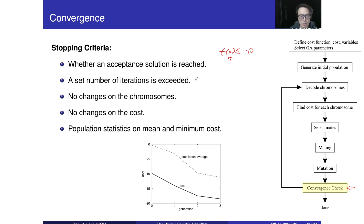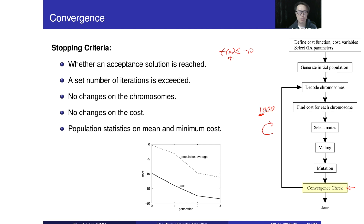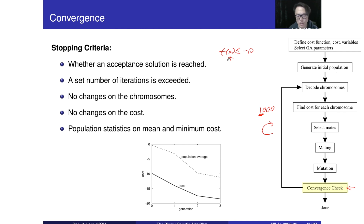Another stopping criterion is that we repeat this process for a set number of iterations — for example, 1,000 times. That means no matter whether we achieve a feasible solution or not, we are going to stop. Of course, if we reach the maximum iteration and the solution is not good enough, we can continue — just use the last solution and put it back into the population as one of the members, and then repeat the process.